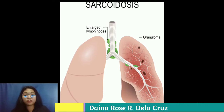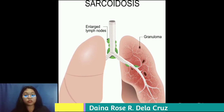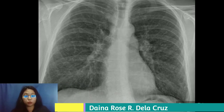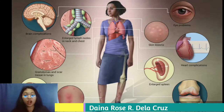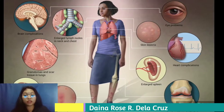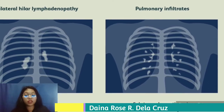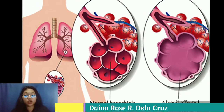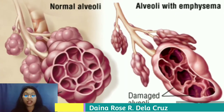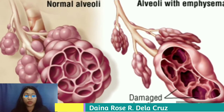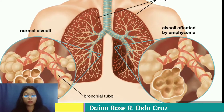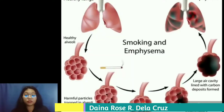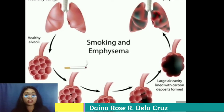Sarcoidosis involves abnormal collections of inflammatory cells forming lumps known as granulomata. The disease usually begins in the lungs, skin, or lymph nodes, and less commonly affects the eyes, liver, heart, and brain, though any organ can be affected. Emphysema is a lung condition causing shortness of breath in which the alveoli are damaged; over time the inner walls of the air sacs weaken and rupture, creating larger air spaces, reducing the surface area of the lungs and the amount of oxygen reaching the bloodstream.